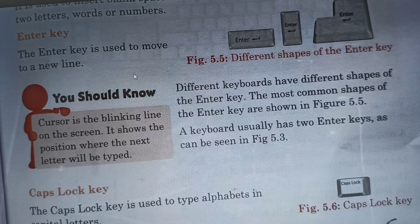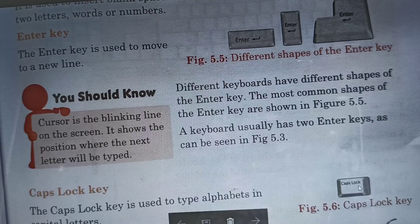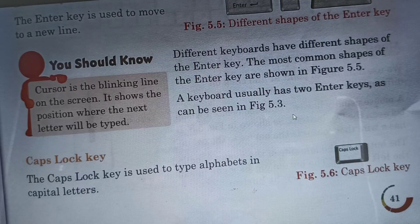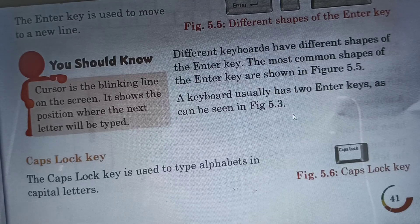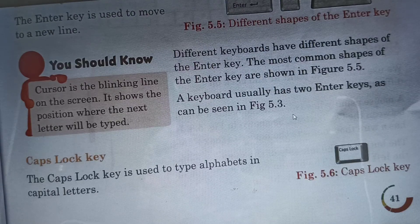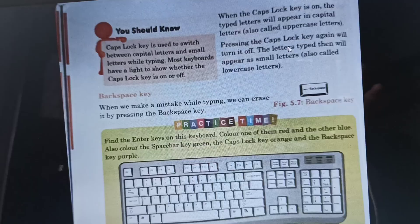Next we come to the caps lock key. Here you can see the image of the caps lock key. The caps lock key is used to type alphabets in capital letters. When you press the caps lock key and start typing, all the alphabets will appear in capital letters. When the caps lock key is on, the typed letters will appear in capital letters, also called uppercase letters.